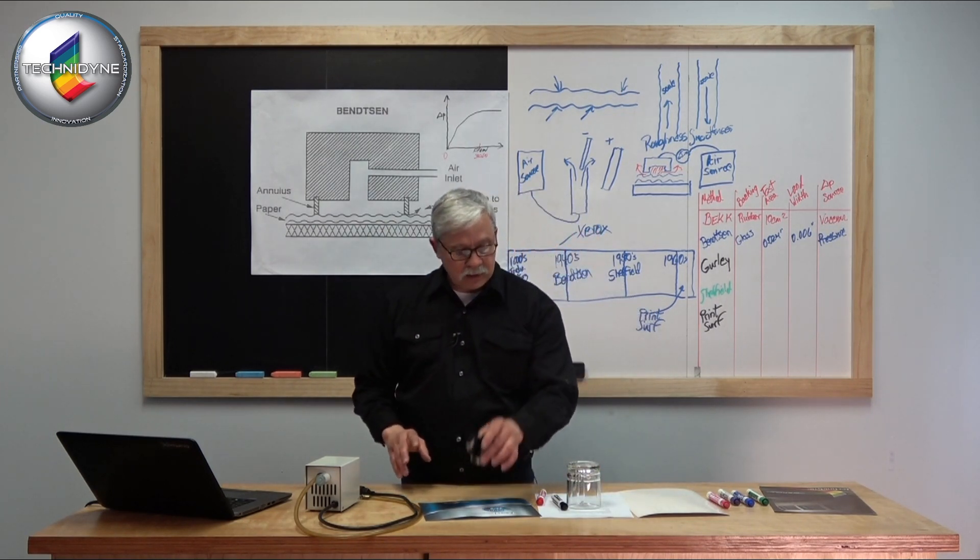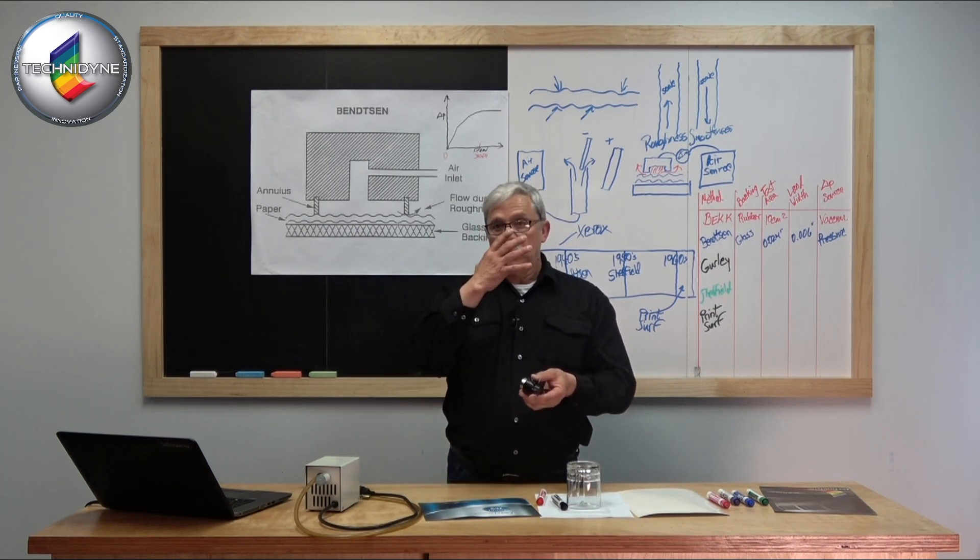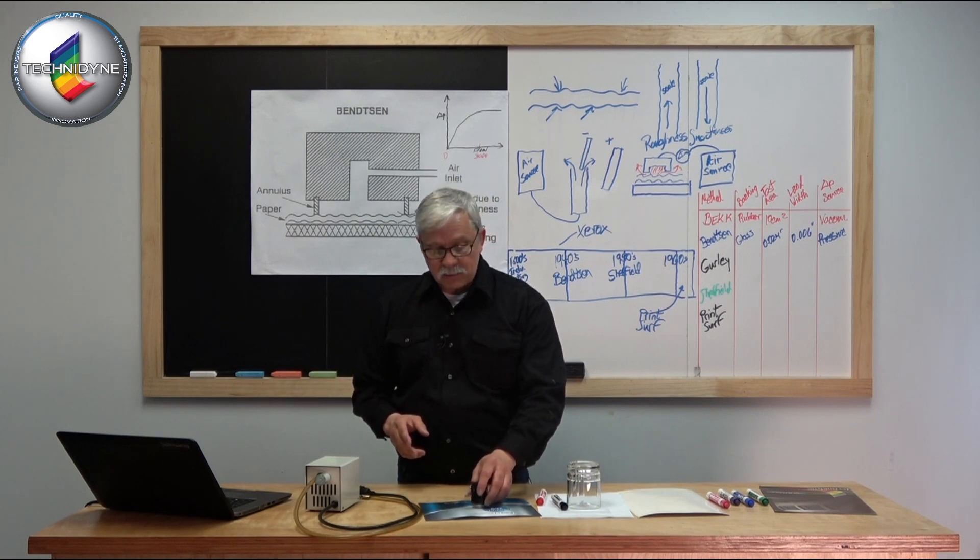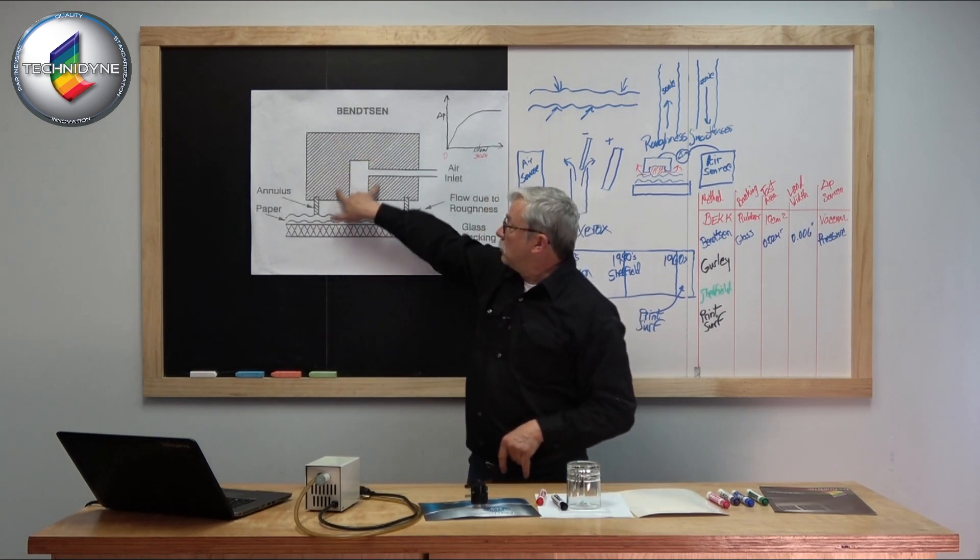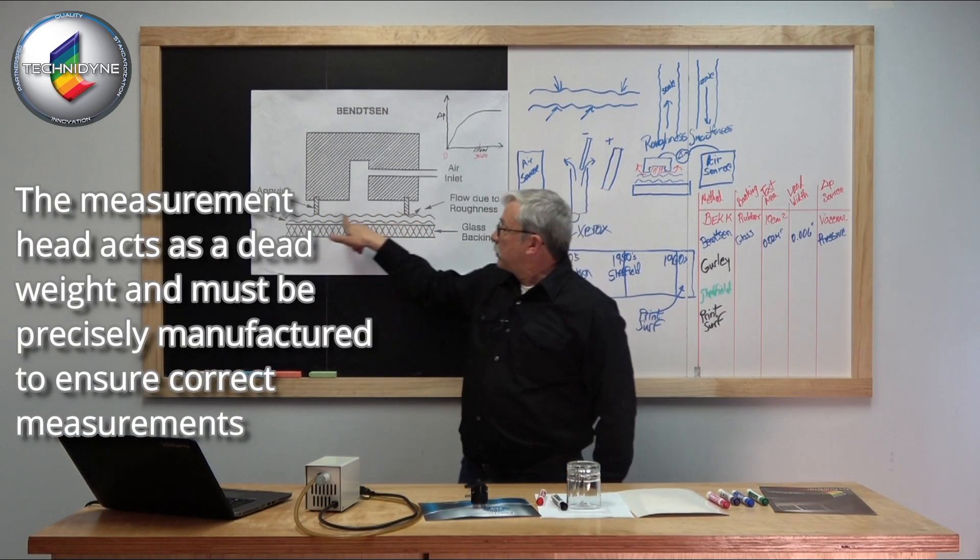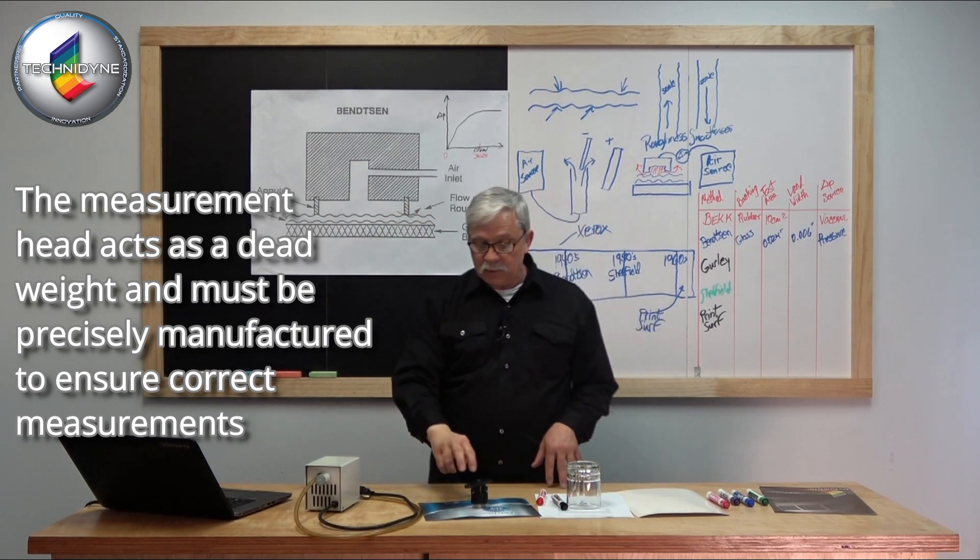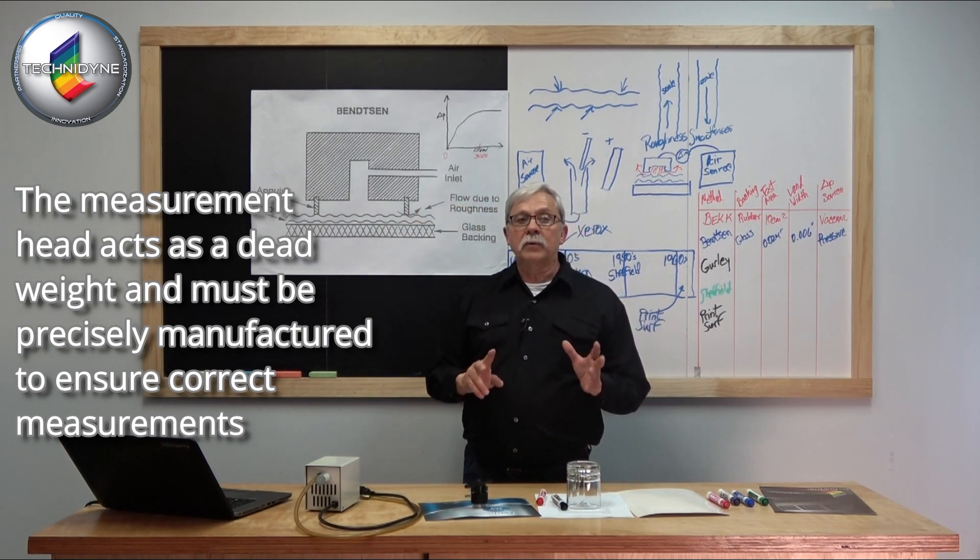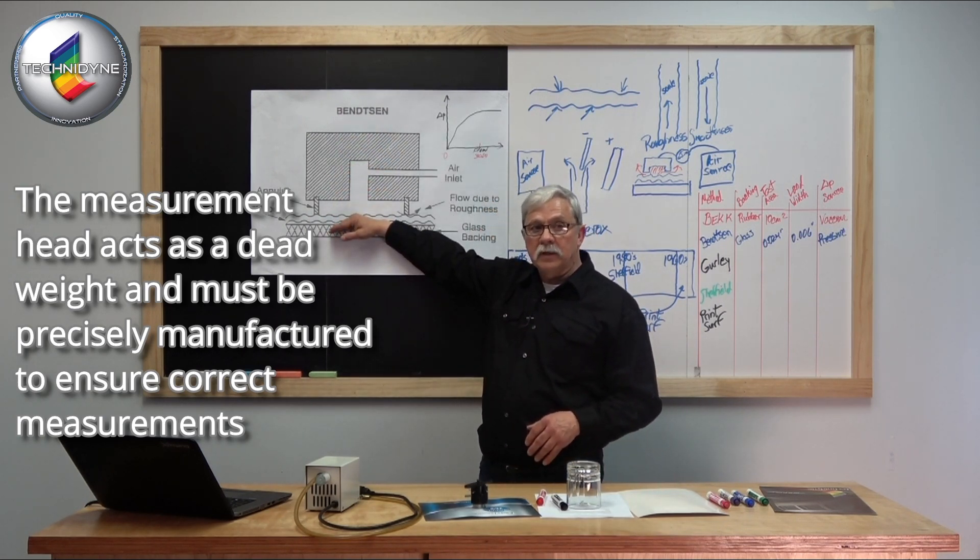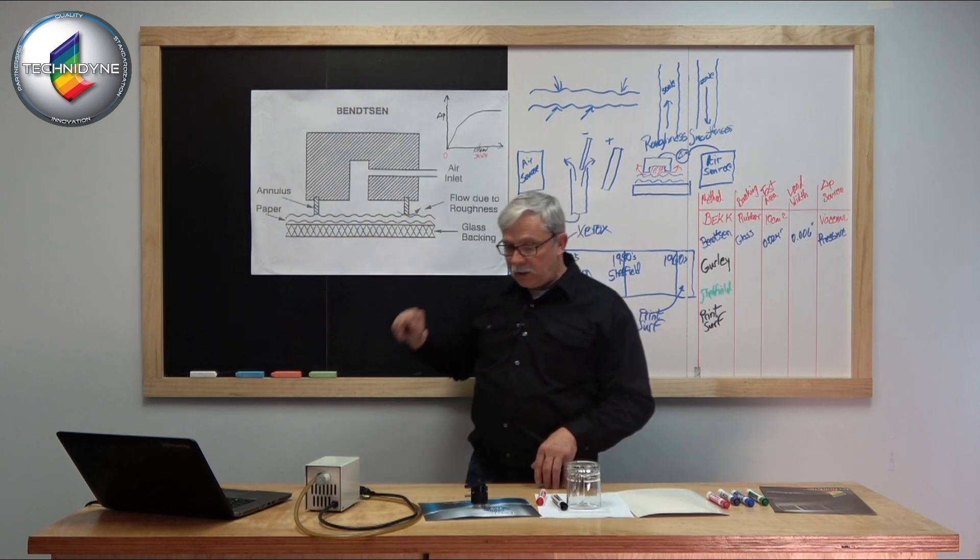You could imagine that if I had two different masses, if I had one at 260 grams and another at 460 grams, placing that on the sample would exert more pressure on the paper. I may do some smoothing or compressing if the sample is compressible. Now I'm introducing a variable from my first piece to my second based on loading the sample differently. So I have to maintain my loading pressure, my air inlet pressure, and how flat the surface is, along with how flat my backing is.